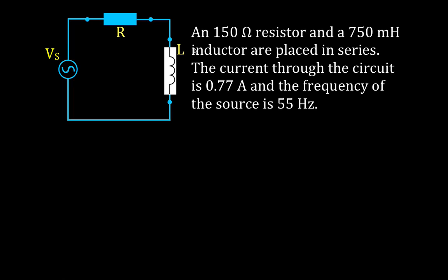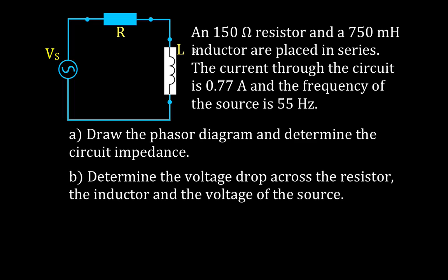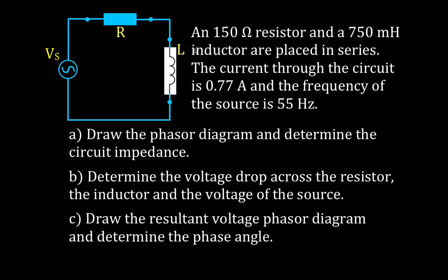These are the things we're going to do in this video: we're going to determine the circuit impedance and draw the phasor diagram for the impedance. We're going to determine the voltage drop across the resistor, the inductor, and the voltage of the source. We are going to draw the phasor diagram for the voltages and determine the phase angle phi.